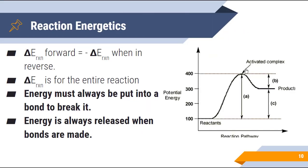A couple of other key things to keep in mind regarding delta E: for the forward reaction, delta E is positive. When we go in the reverse direction, delta E is just the opposite sign. Going towards the right — converting reactants to products — delta E is positive 200, meaning we need to put in 200 kilojoules for the reaction to take place. Going the opposite direction, we get 200 kilojoules back out, so it is exothermic. Remember that delta E is for the entire reaction — you don't need to worry about moles or mole ratios.